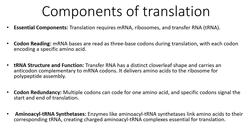Looking at the structure and function of transfer RNA: tRNA has a cloverleaf shape and carries an anticodon complementary to the mRNA codons. For example, if the codon is UAC, the anticodon is AUG — methionine. This tRNA delivers amino acids to the ribosome for polypeptide assembly.